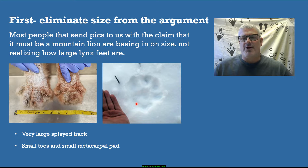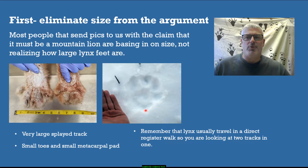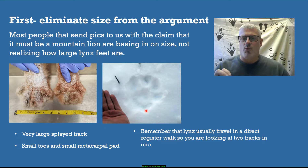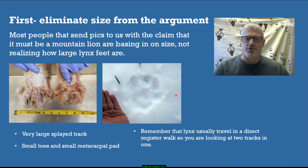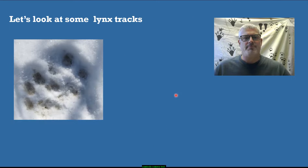Lynx usually walk in a direct register walk, which means their hind foot steps into their front track — so you're actually looking at two tracks superimposed on each other, and that can also distort the track a little bit.